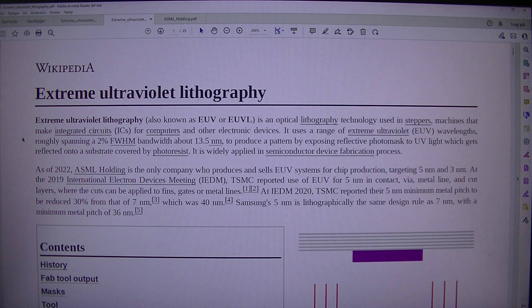a pattern by exposing reflective photomask to UV light which gets reflected onto a substrate covered by photoresist. It is widely applied in semiconductor device fabrication process. As of 2022, ASML Holding is the only company who produces and sells EUV systems for chip production.